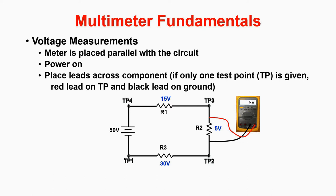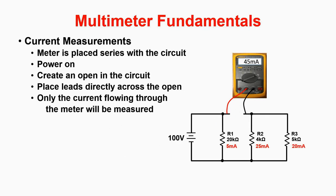The next measurement we learned about was the current measurement. For this, the meter must be placed in series with the circuit. This is because the current we are measuring must flow through the meter to get an accurate reading. The three steps that we need to make sure are in place are power on, create an open, and then place the leads directly across the opening.